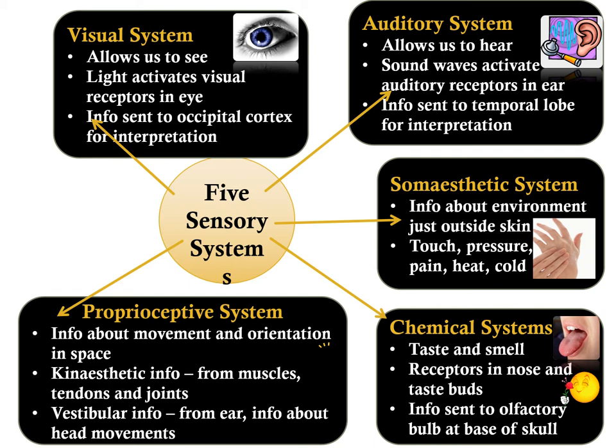The fourth is the somaesthetic system, which provides information about the environment immediately outside the skin — information relating to touch, pressure, heat, cold, and pain. The fifth is the chemical system, which allows us to experience taste and smell. The receptors for taste are the taste buds on the tongue, determining tastes such as sweet, sour, salty, and bitter.